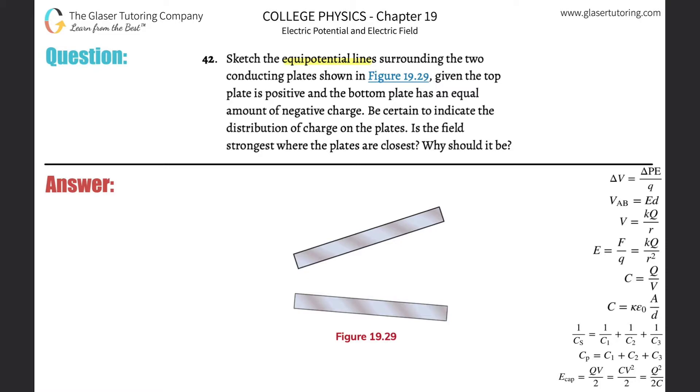Number 42, sketch the equipotential lines surrounding the two connecting planes shown in the figure. Given the top plate is positive and the bottom has an equal amount of negative, be certain to indicate the distribution. Is the field strongest where the plates are closest?